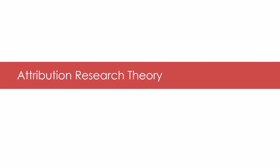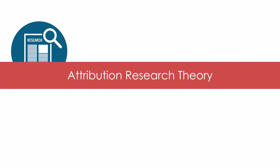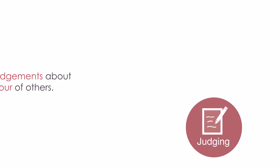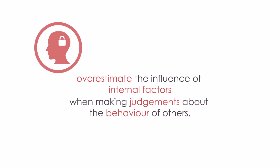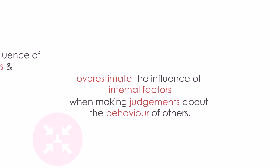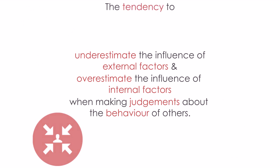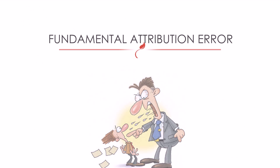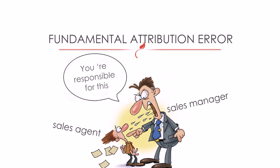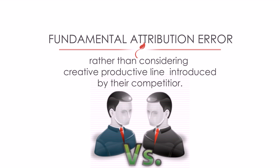Attribution research has found that biases distort attribution. While judging the behavior of other people, we tend to overestimate internal factors and underestimate external factors — this is a fundamental attribution error. This error is why a sales manager tends to blame his sales agents for their poor performance rather than considering the competitive product line introduced by a competitor.